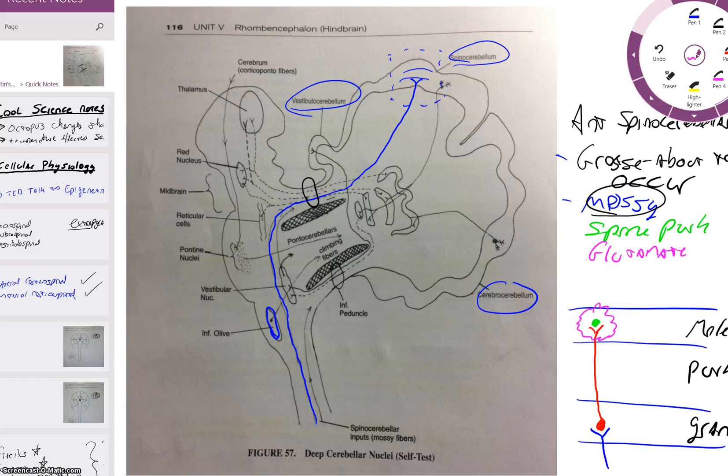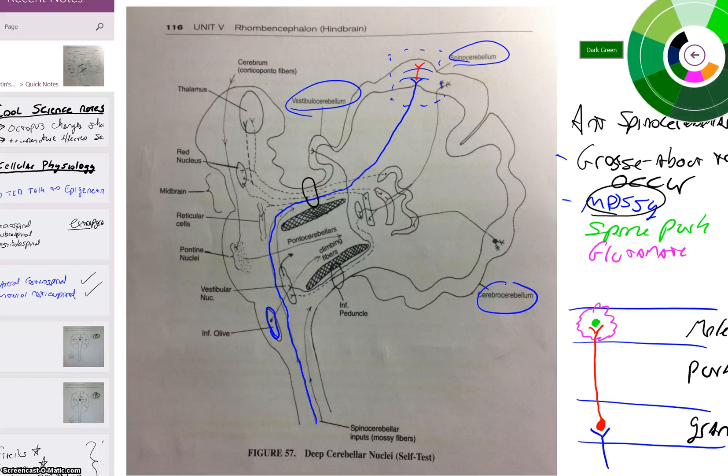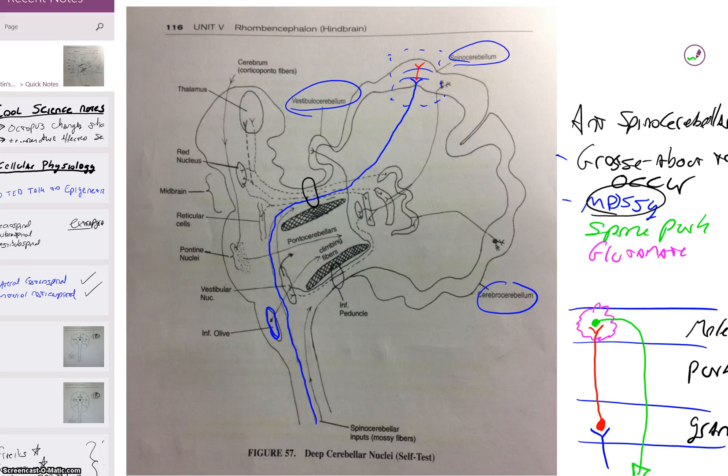From this point on, it's identical to the posterior spinocerebellar and the cuneocerebellar. So let's just draw our little cells here coming up. Then we have our spine Purkinje green starting in the molecular layer. It's going to continue because it's got to go somewhere. That spine Purkinje has to do something.